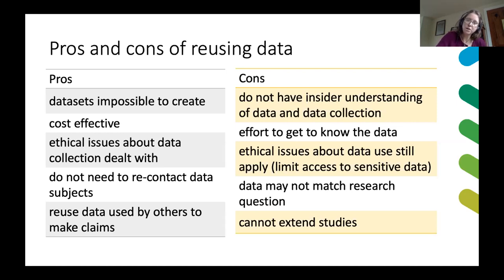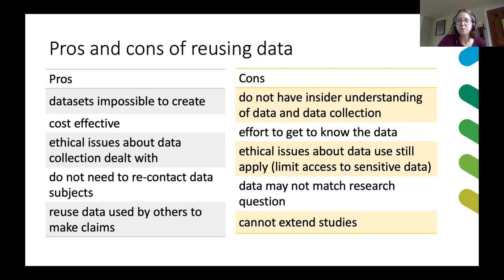There may still be some ethical issues that limit the amount of data you can access. For example, we don't often release data to low geographies because that might make the data sensitive. So you might not be able to access the data you're specifically looking for, and you may have to rethink how you use the data and how it can support your service. The data might not exactly match your research questions, but you can rethink how it can be used.